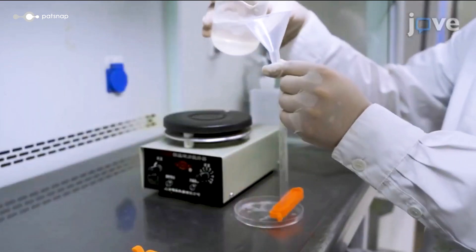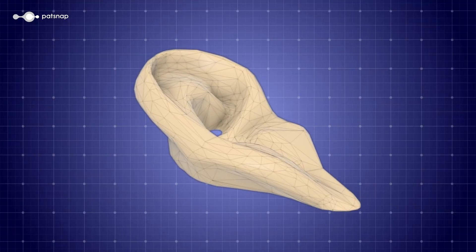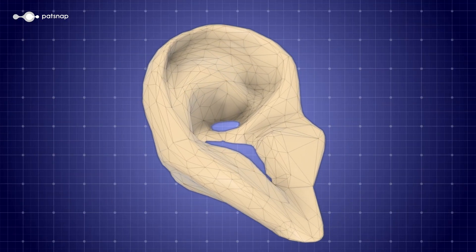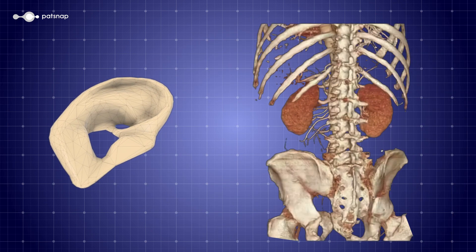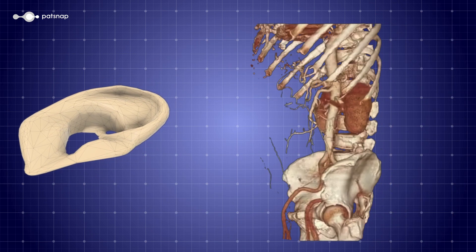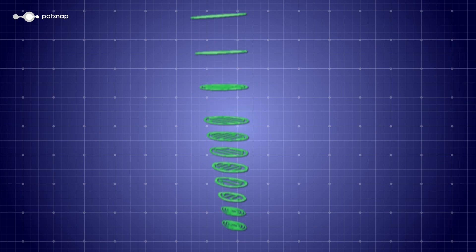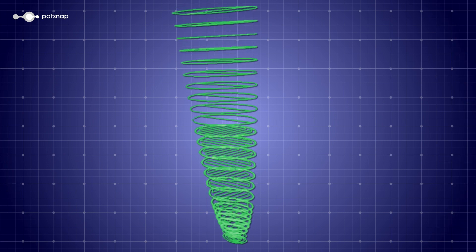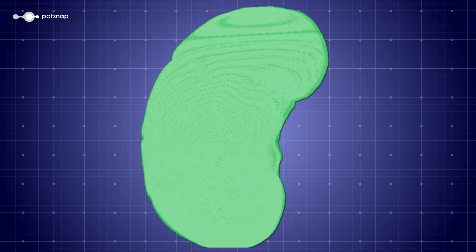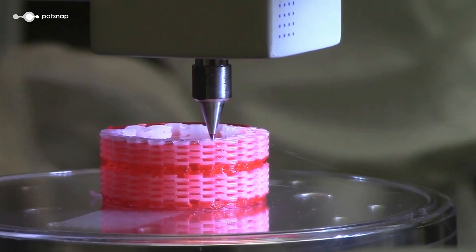Bioprinting follows a blueprint not unlike traditional 3D printing, and begins with a digital model. Generally, these models are based on a CT or MRI scan, that are imported into a slicing software that creates thousands of two-dimensional slices. From there, the printer works its magic, meticulously placing material layer by layer to print the desired structure.